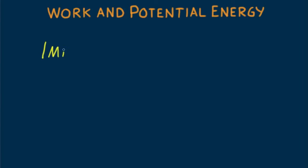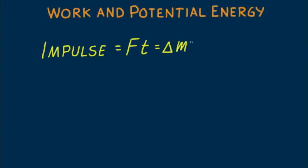We have seen that when we multiply an applied force by the time of application of that force, we are talking about impulse, F times T. Applying an impulse to something changes its momentum. Impulse produces a change in momentum.